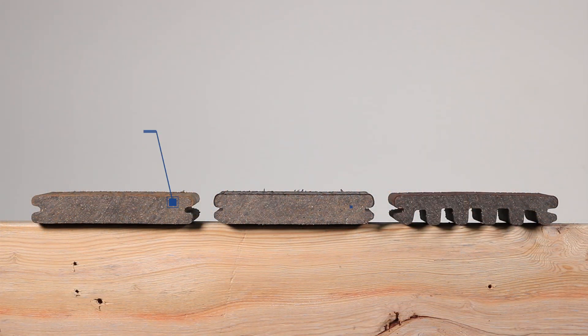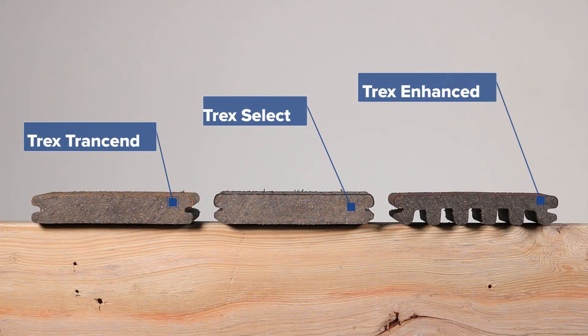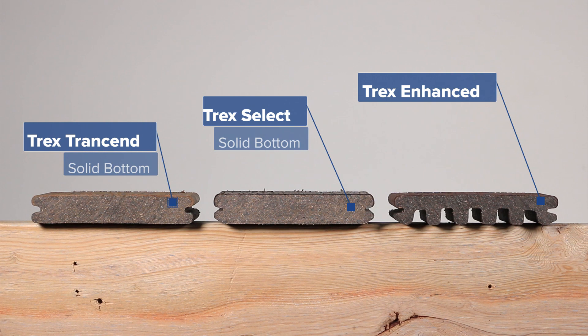Trex offers three different lines of decking to complete your outdoor space and deliver the looks you want. The Trex Transcend and Select lines feature a solid bottom while the economical Enhanced line offers a scalloped bottom of the board.